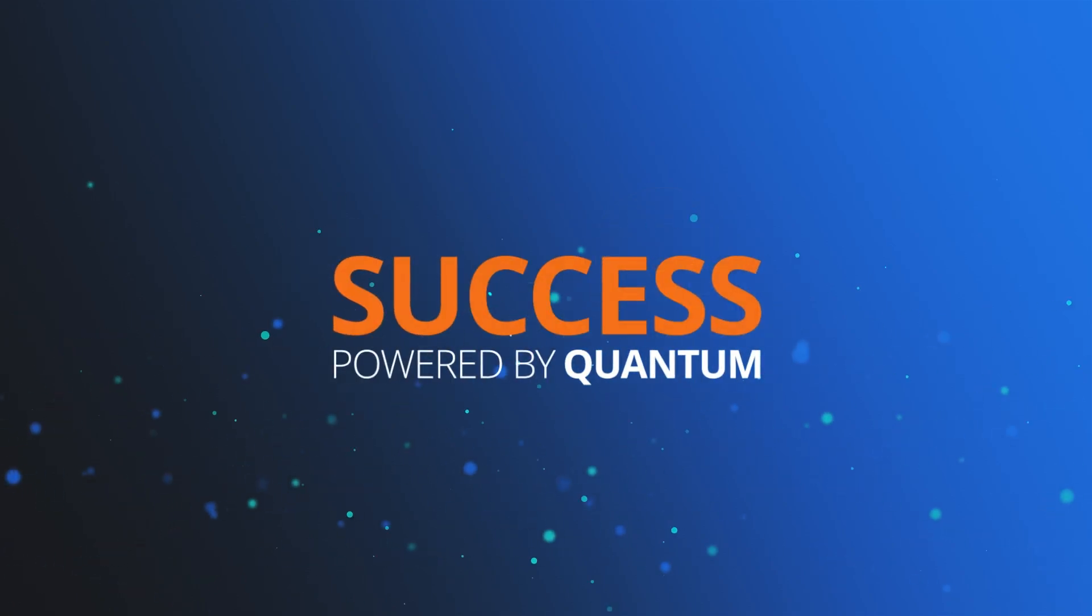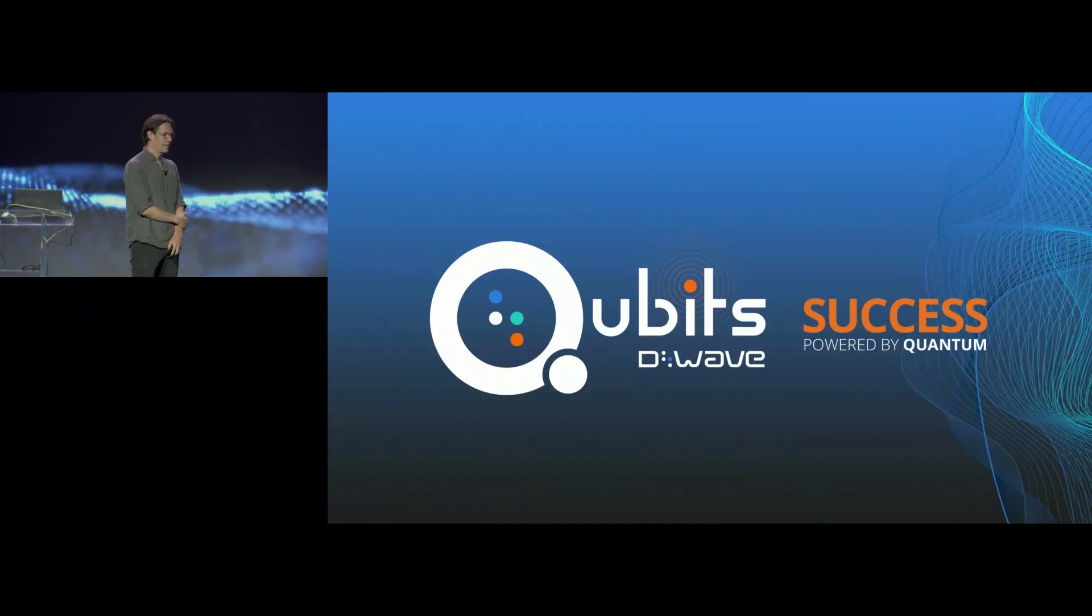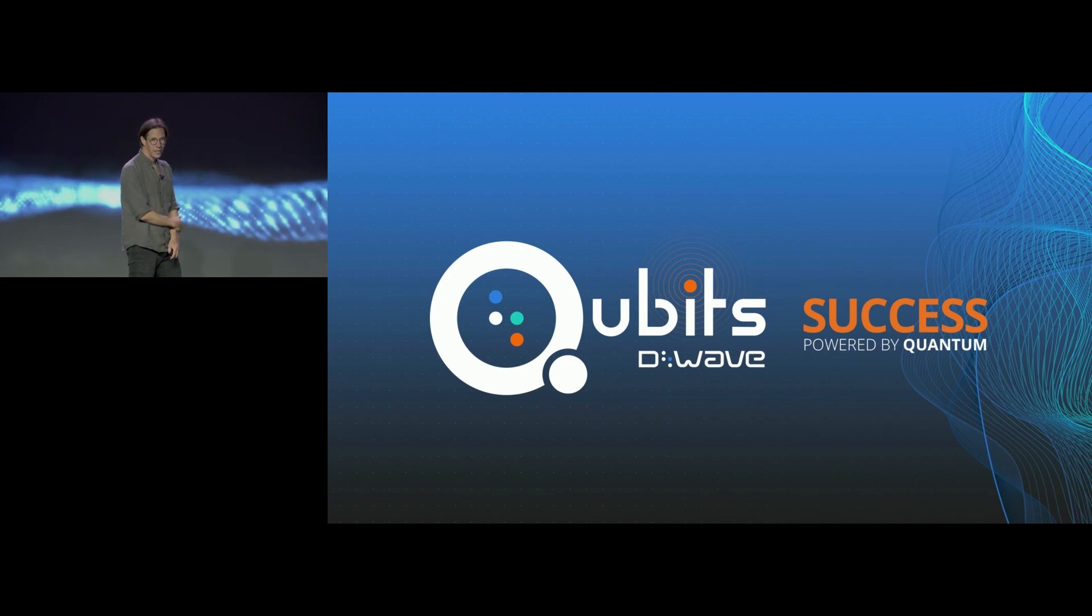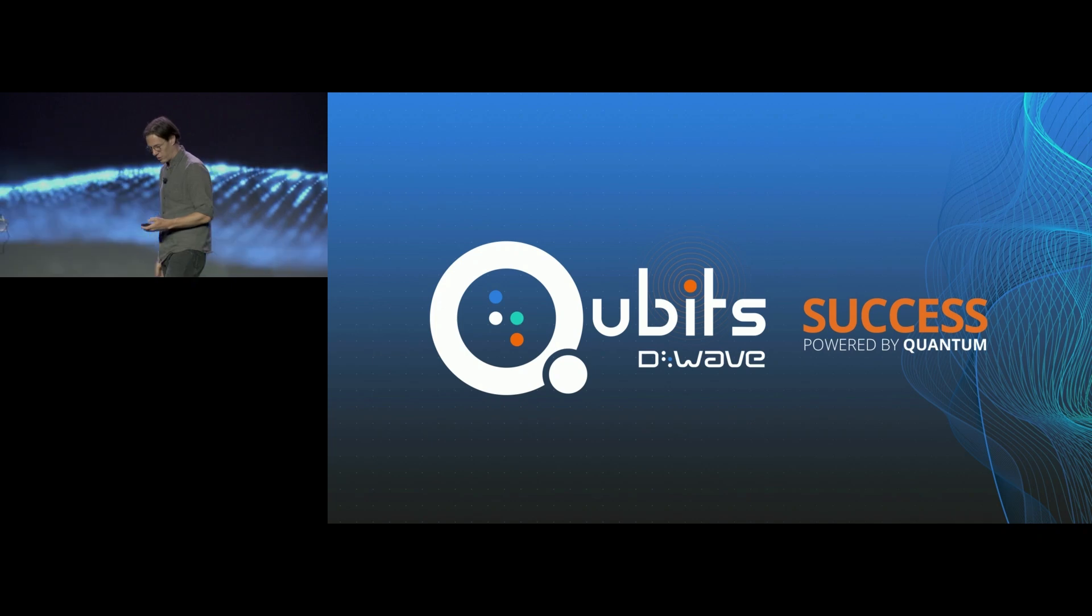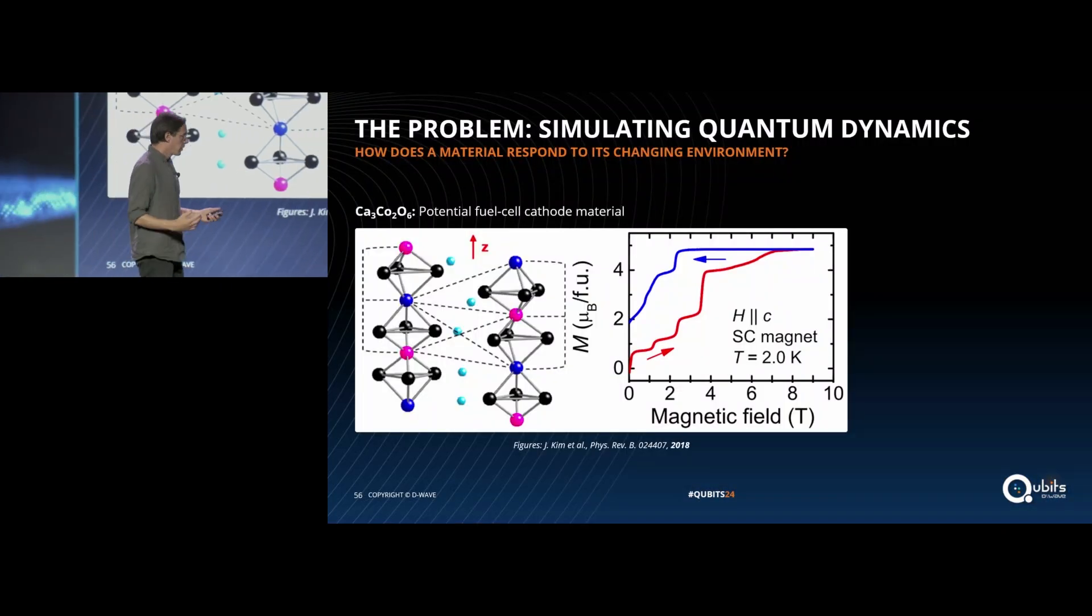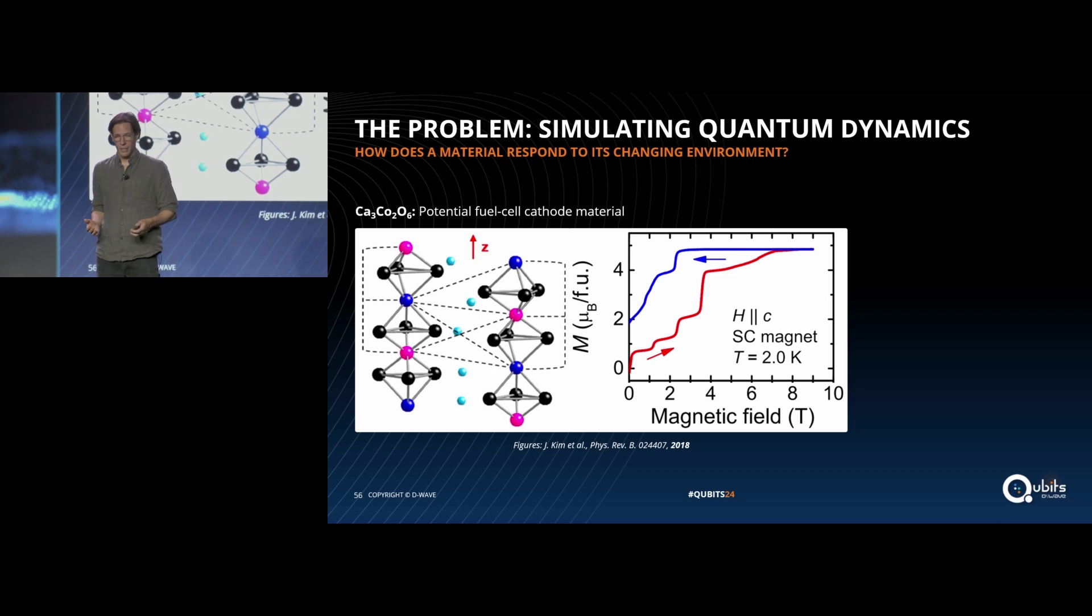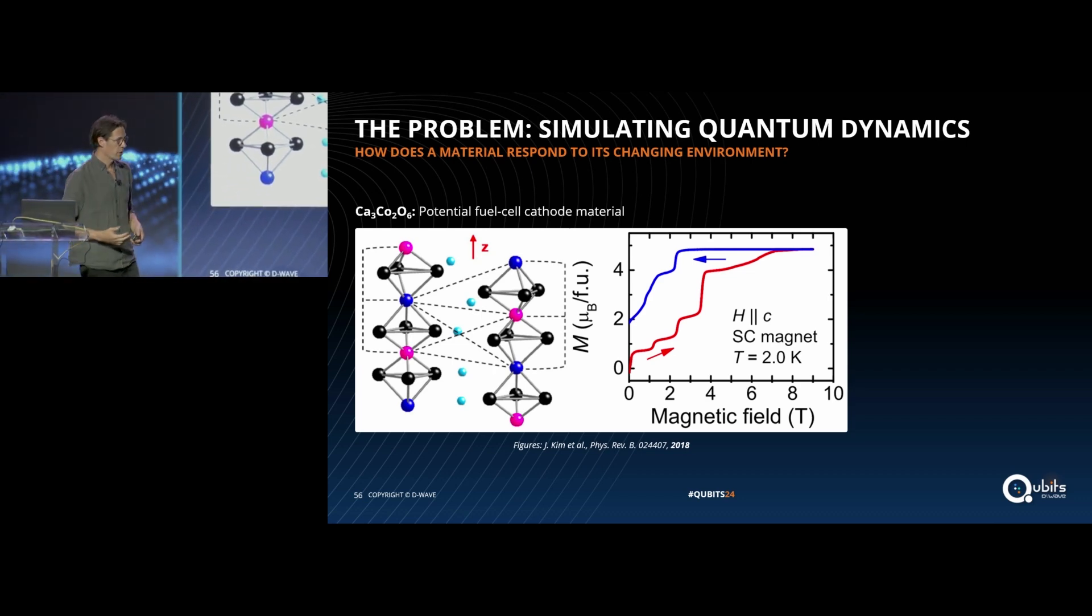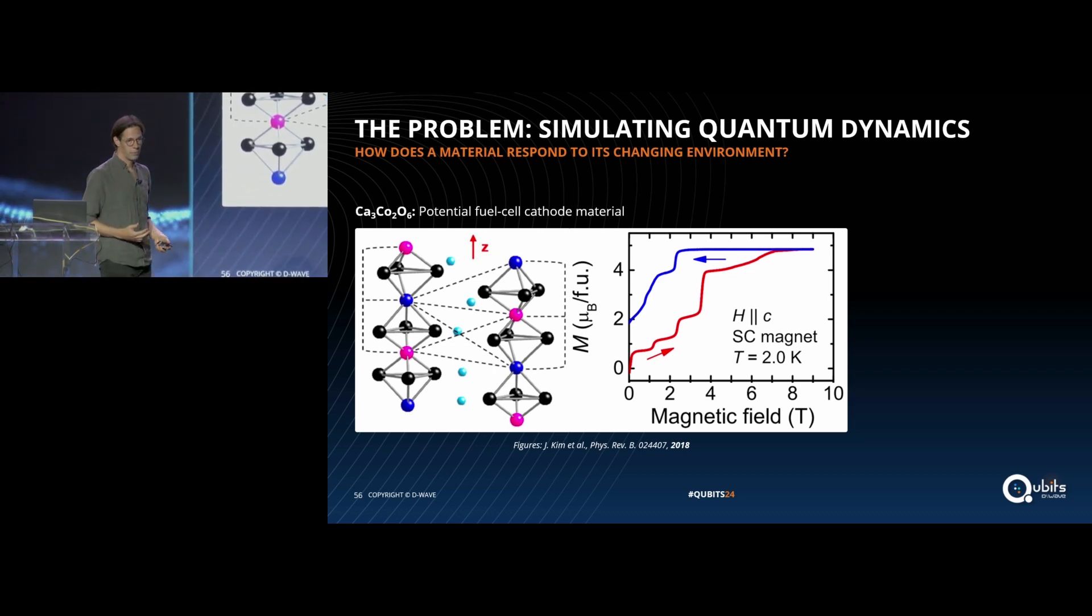Thank you very much. It's nice to be here. My name is Andrew King and I'm a scientist. I'm very excited to talk to you today about our work in computational supremacy in quantum simulation. The job that we're going to be doing with this experiment is a simulation of quantum dynamics. I just want to give a little bit of an idea of why this is important.